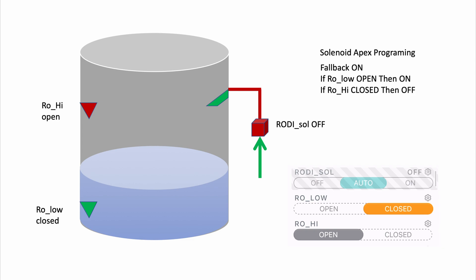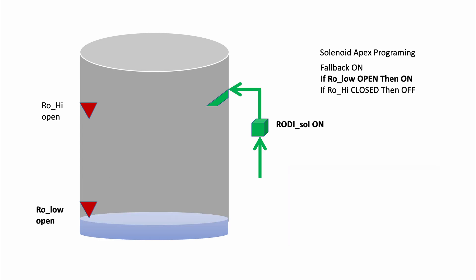So over time, this top-off water is being pumped into my display to replace evaporation and so the water level is going to go down and down and down and eventually it's going to go down and it will trip the low-level optical sensor.